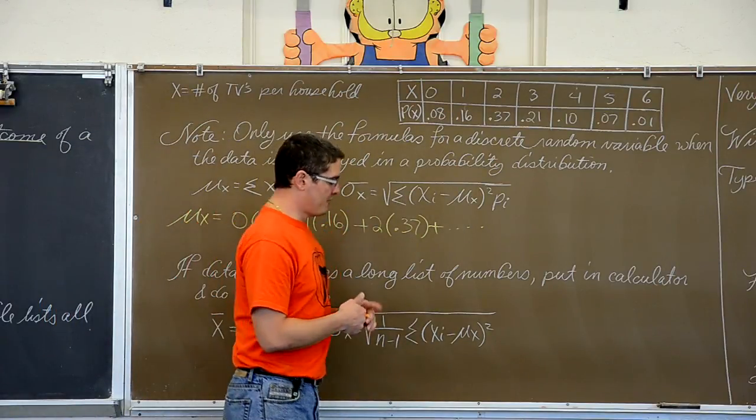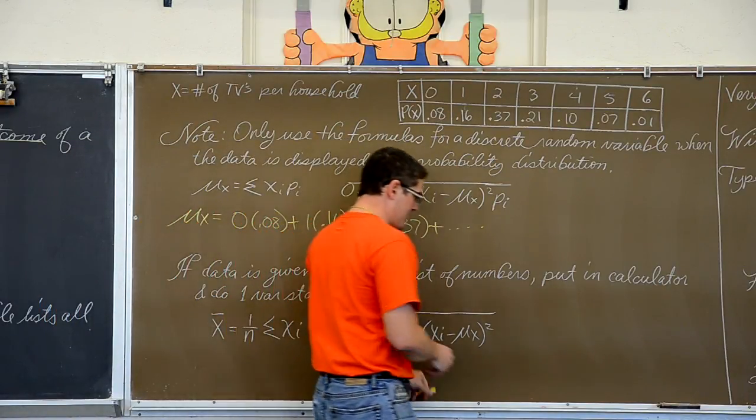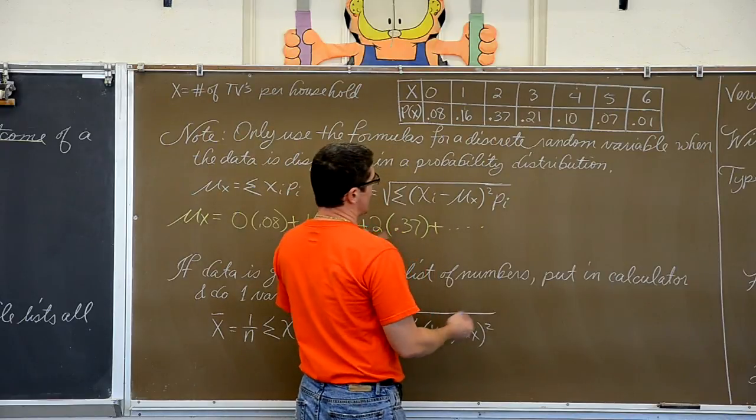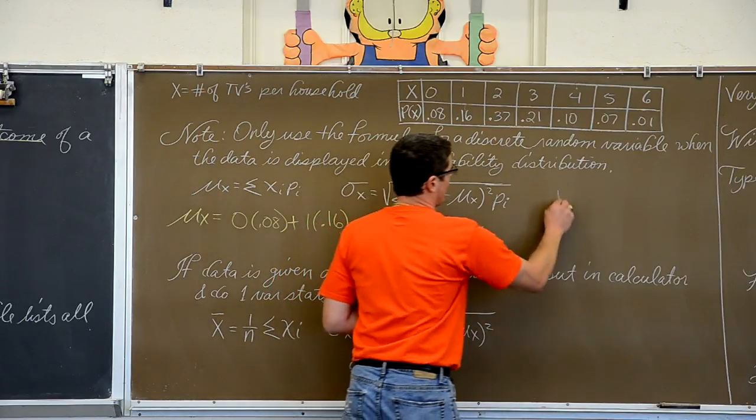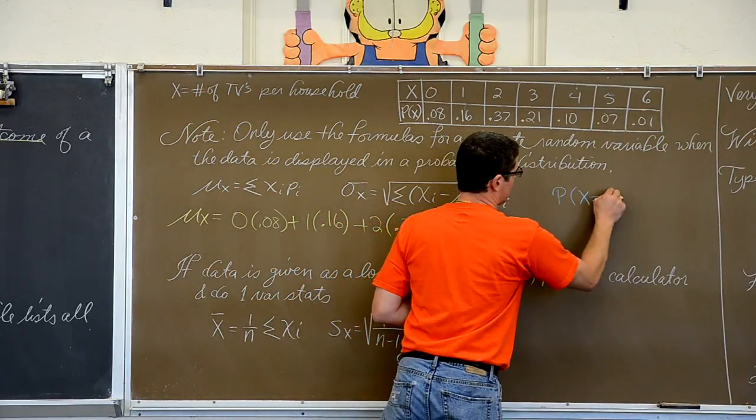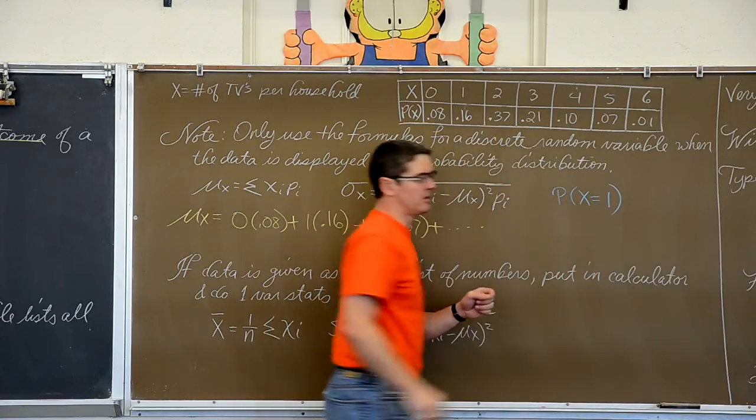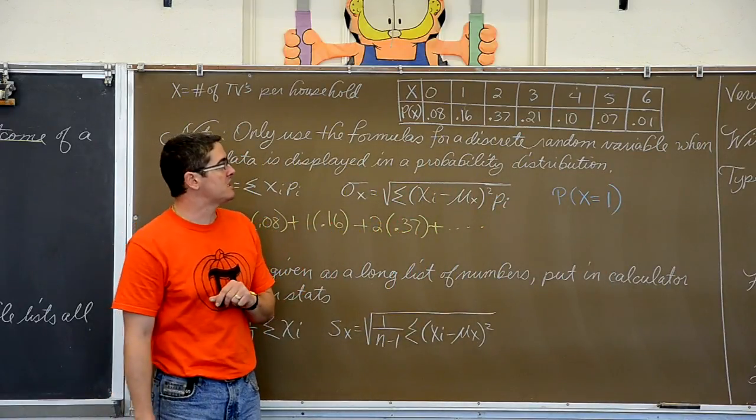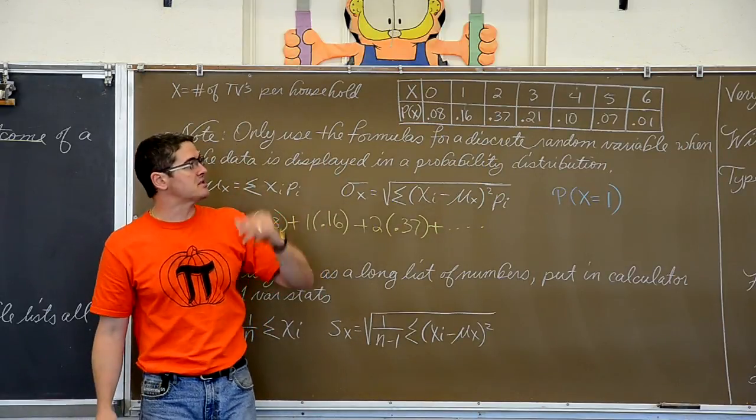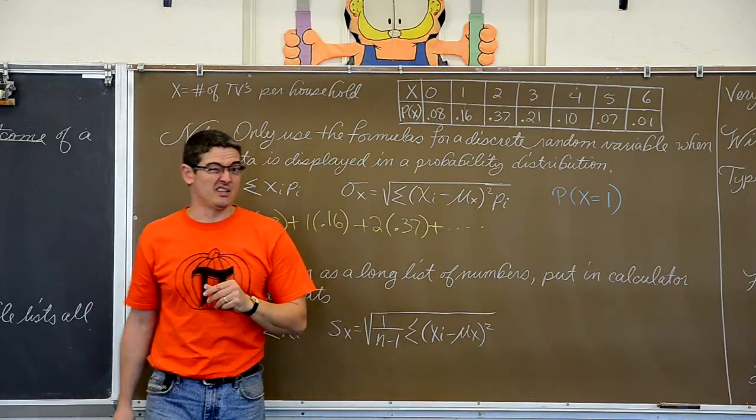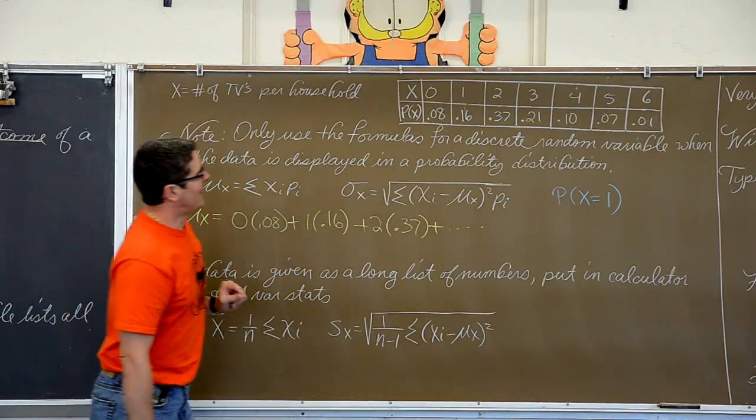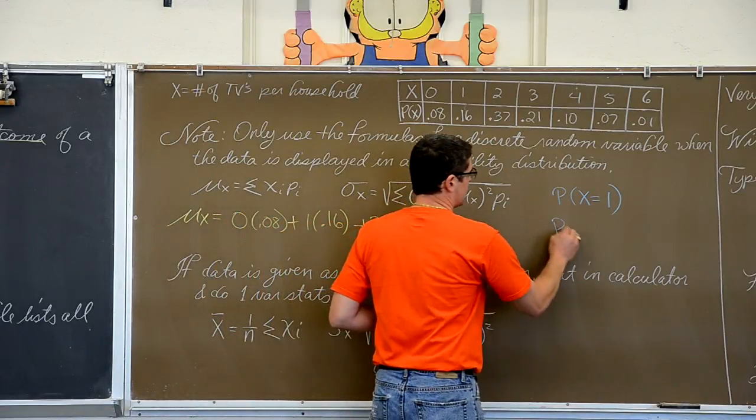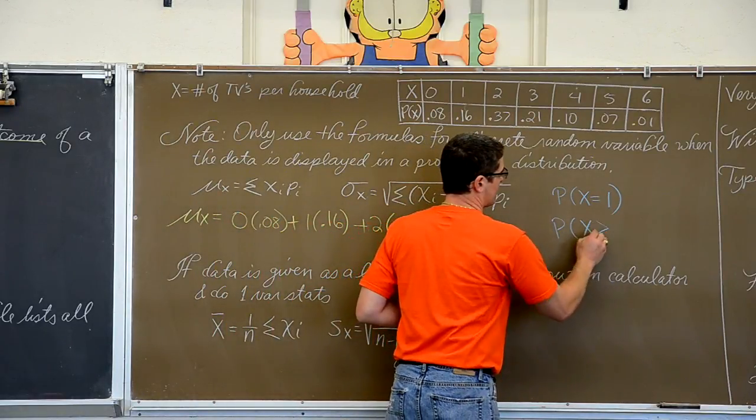But let's remind ourselves of finding maybe some probabilities that we did in our probability chapter, the last chapter. Like what is the probability that x equals one? What is the probability that a household has exactly one TV in the house? Well that is 16% based on this data, which honestly I did make up for this lecture.